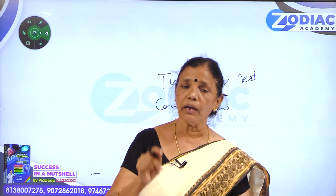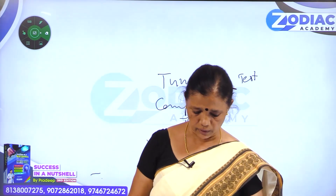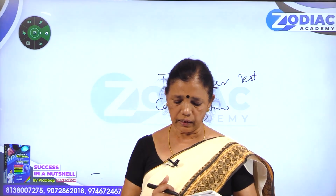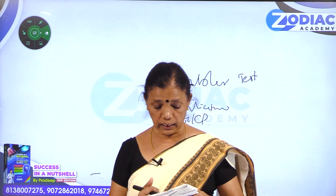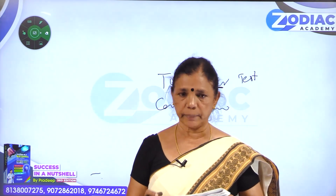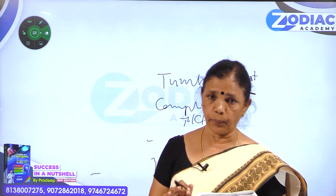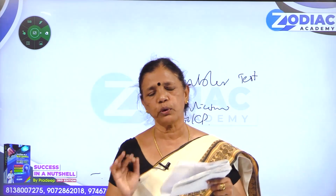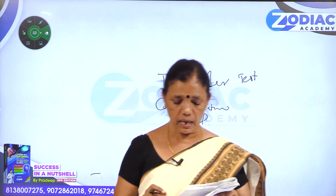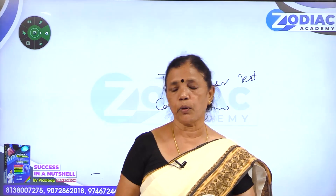Papilledema means edema of the optic disc. The oculomotor nerve is cranial nerve 3, trochlear nerve is cranial nerve 4, and abducens is cranial nerve 6. If the oculomotor, trochlear, or abducens area is affected, there will commonly be ptosis, unequal pupils - anisocoria means unequal pupils - and diplopia.